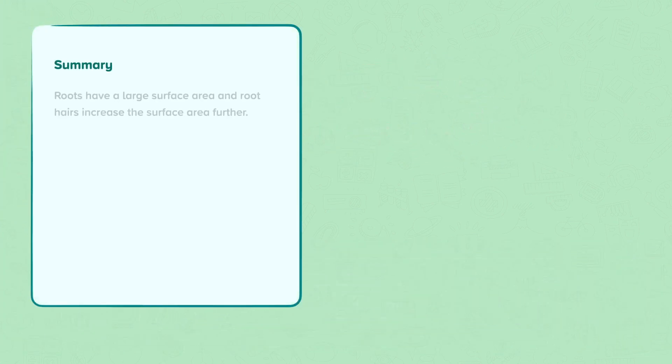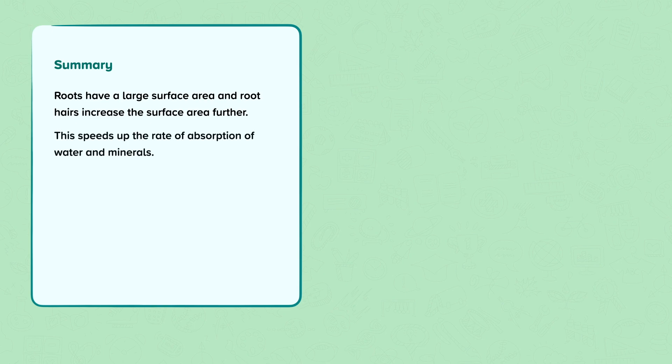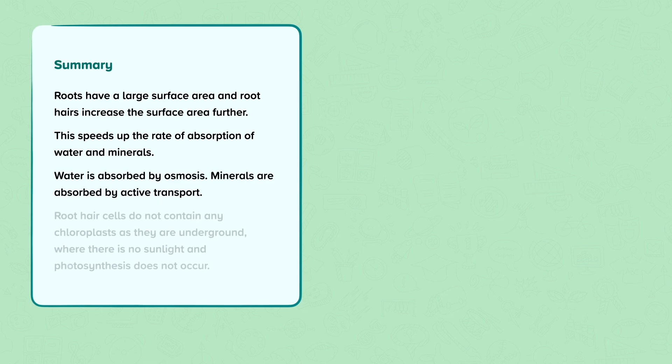To summarise: roots have a large surface area and root hairs increase the surface area further, which speeds up the rate of absorption of water and minerals. Water is absorbed by osmosis and minerals are absorbed by active transport. Root hair cells do not contain any chloroplasts as they are underground, where there is no sunlight and photosynthesis does not occur.